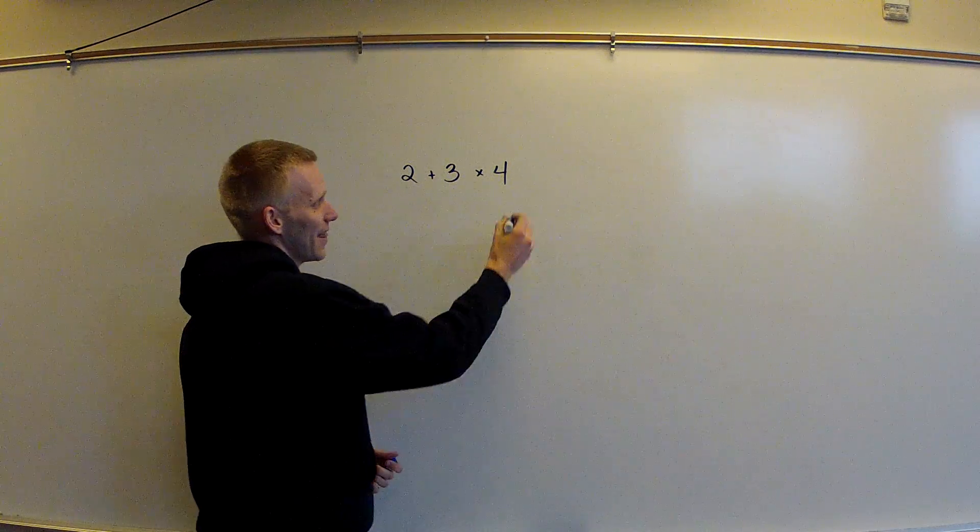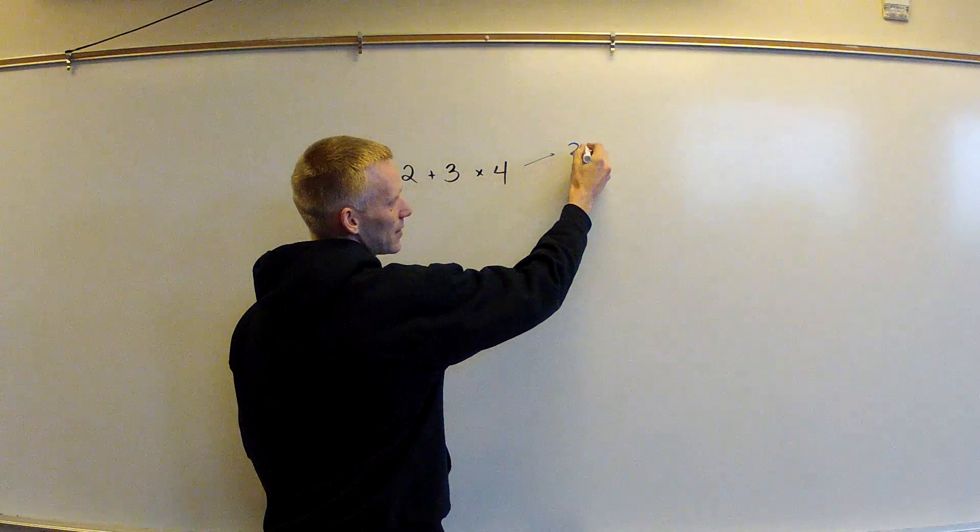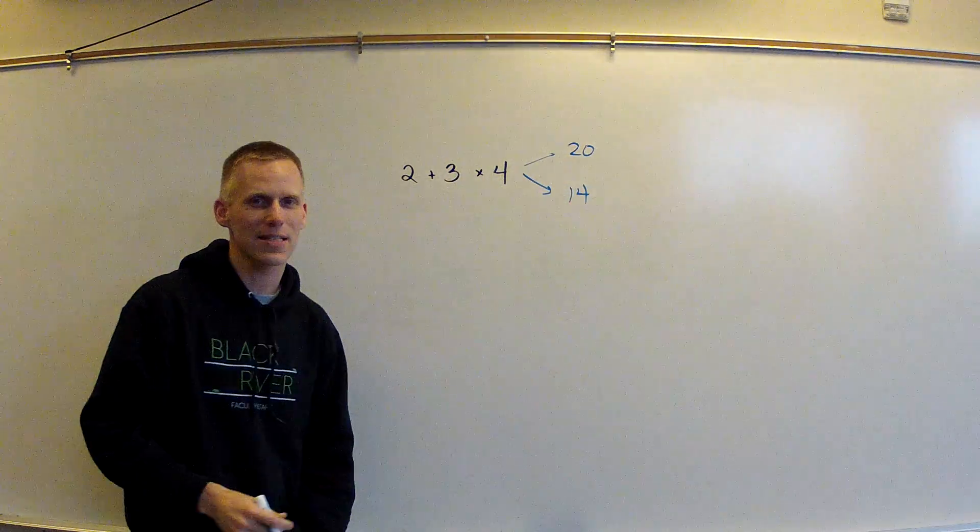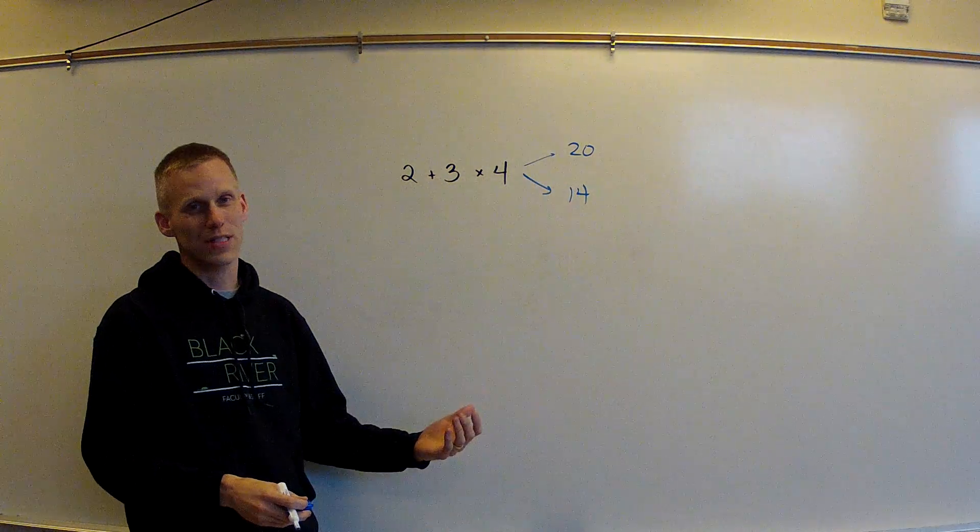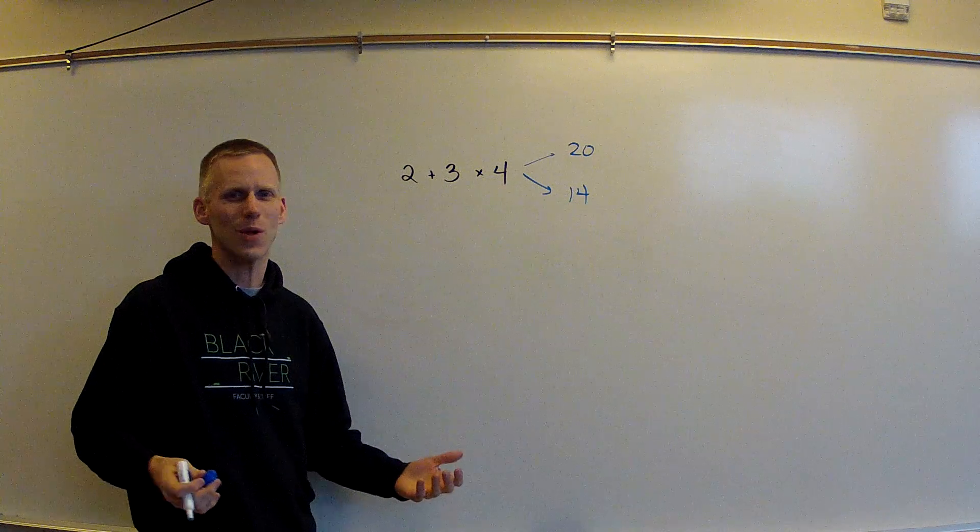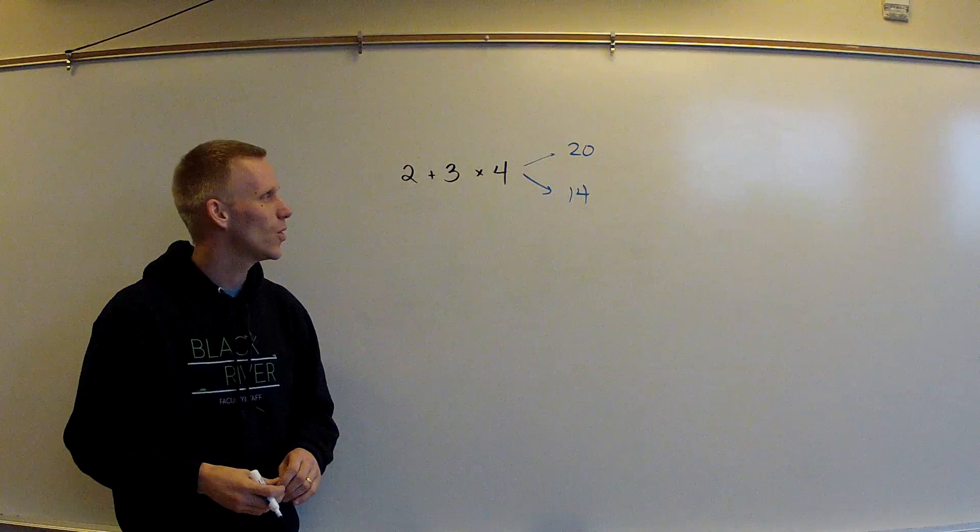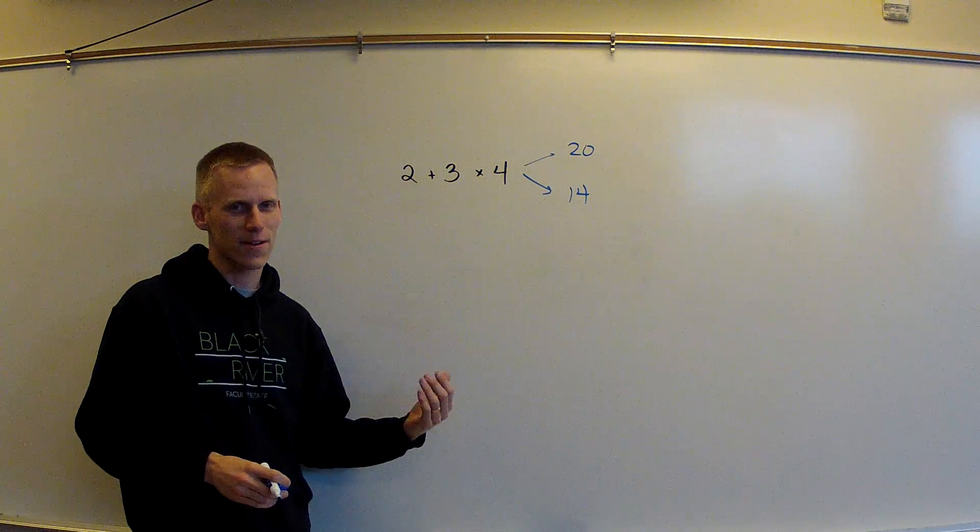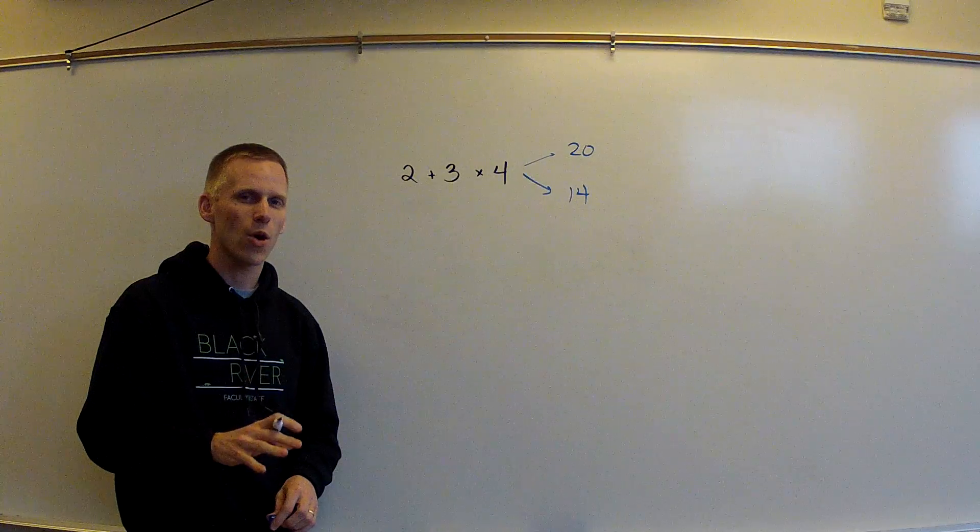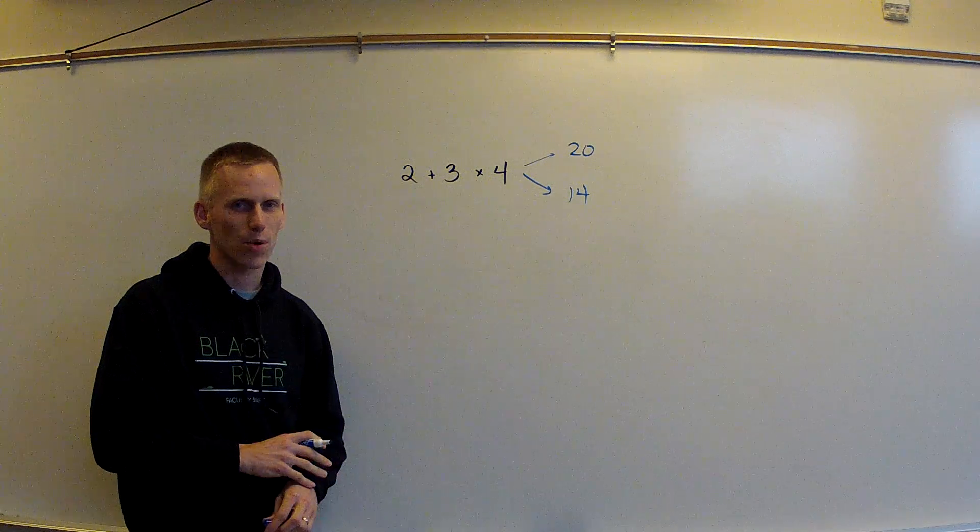Now we know in math that the answer is not two possibilities, right? It's not going to be 20 and 14 or 20 or 14, whichever one we want. We need to know which one it is. Well, mathematicians a very, very long time ago decided on an order in which we do operations.